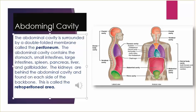Abdominal cavity: the abdominal cavity is surrounded by a double-folded membrane called the peritoneum. The abdominal cavity contains the stomach, small intestines, large intestines, spleen, pancreas, liver, and gallbladder. The kidneys are behind the abdominal cavity and found on each side of the backbone; this area is called the retroperitoneal area.